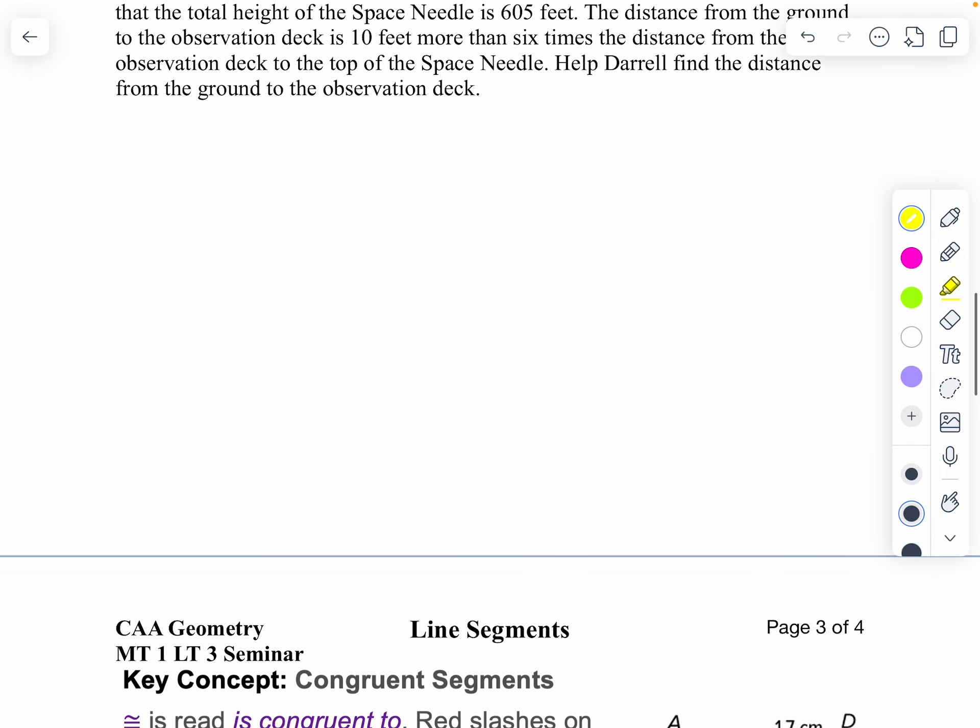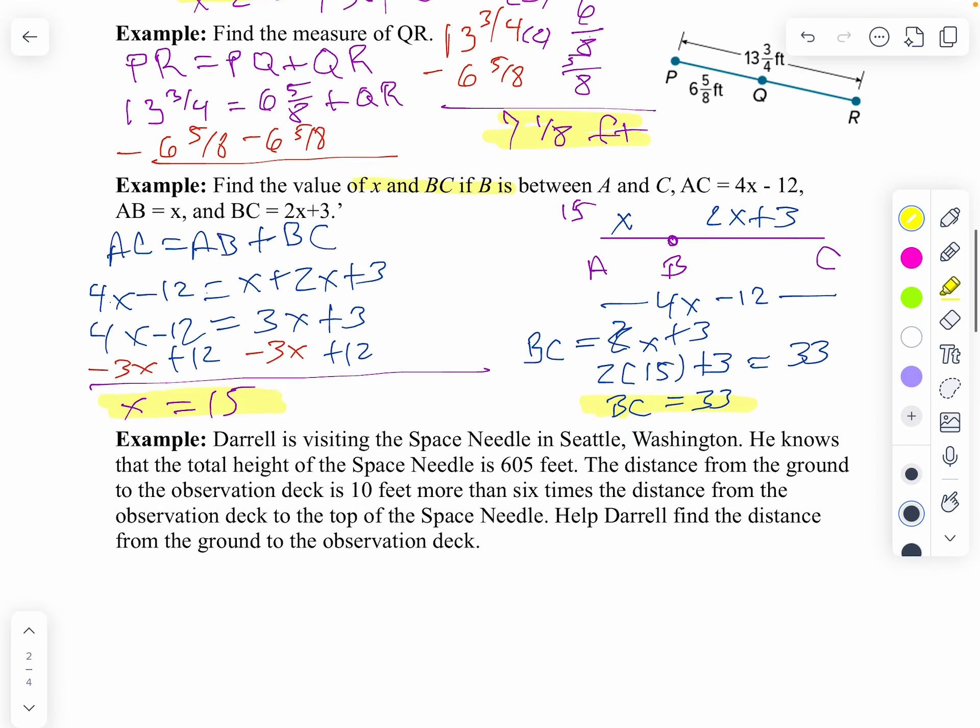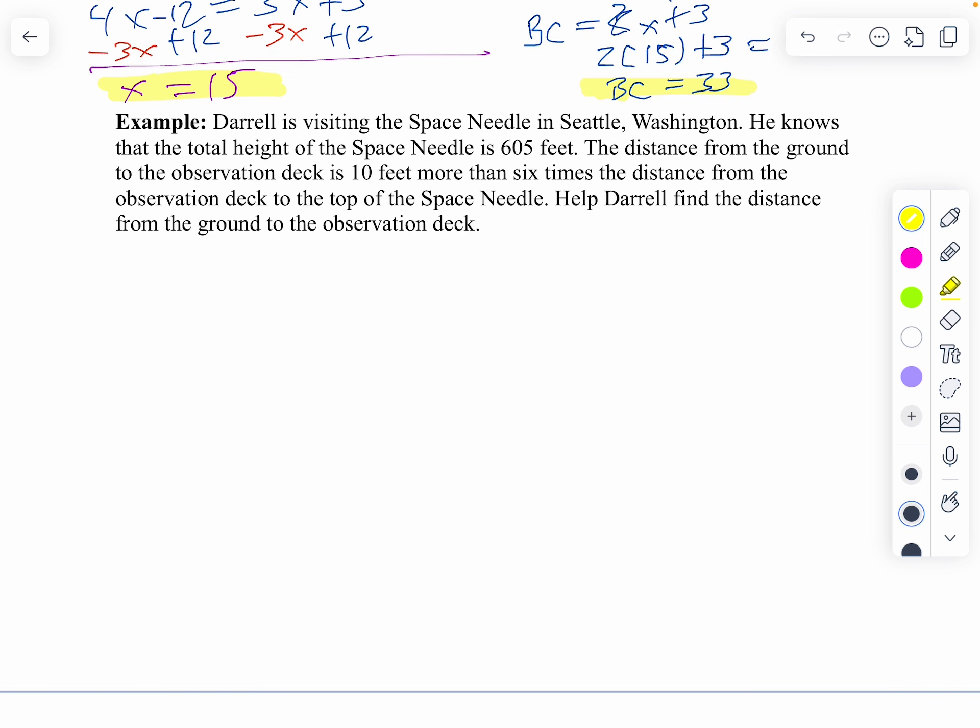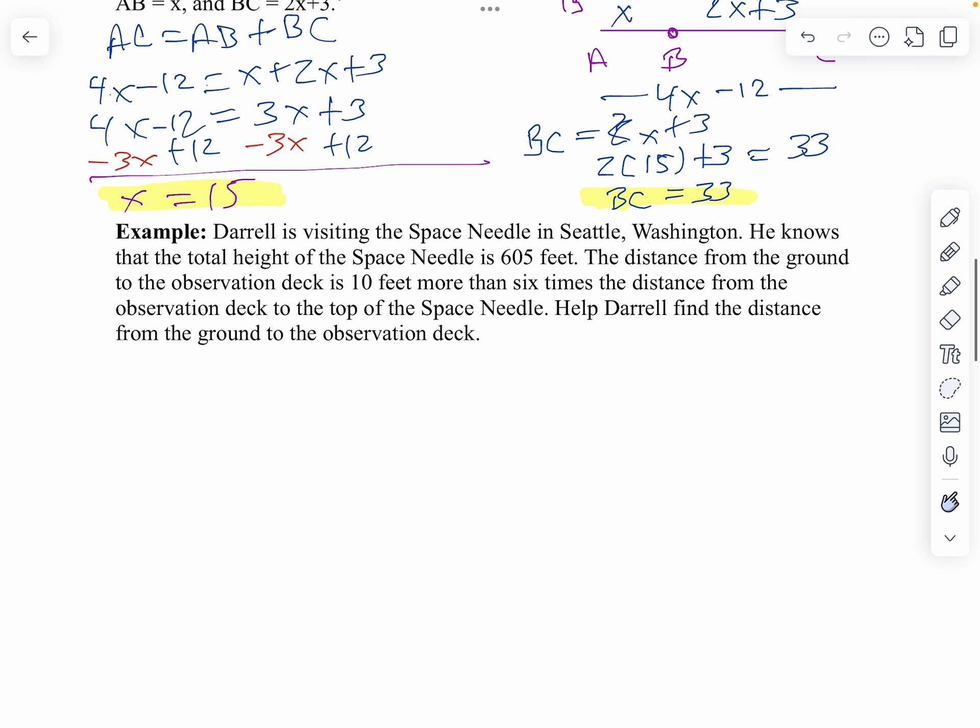Now, if I look at our next example. Oh, I had a nice picture on here, but it disappeared. Well, we'll just draw it out ourselves. Now, it says Darrell is visiting the Space Needle. And, our Space Needle, remember, you can look it up. But, we've got this tower up top. And, then, my needle goes below that. So, it's high in the air and you can look from there. It says he knows the total height of the Space Needle is 605 feet. So, I know this whole length is 605.